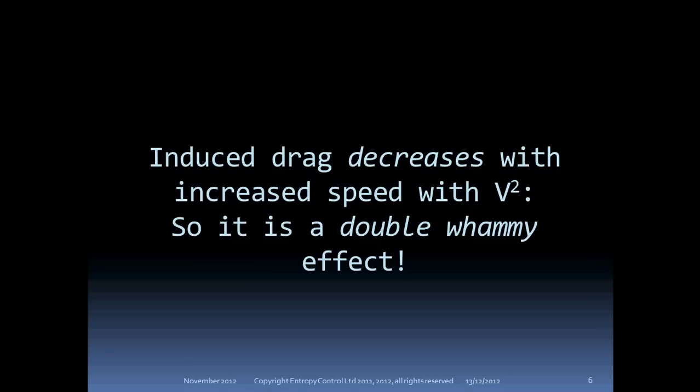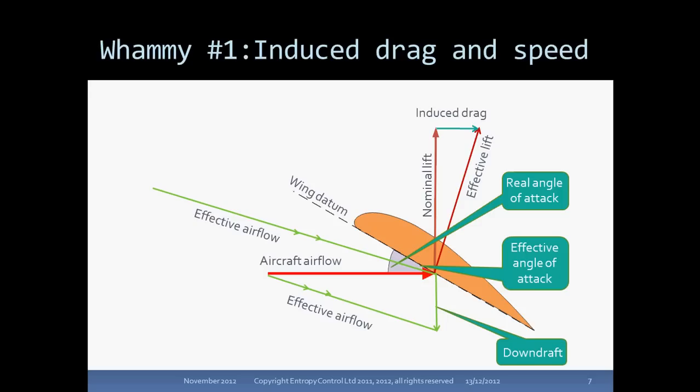You can increase the amount of air being worked on and decrease the downdraft by increasing speed. One of the nice things is that a speed increase has a double whammy effect. Let's take, for example, an aircraft in level flight flying very slowly at a high angle of attack. As we discussed in the previous lecture, the effect of airflow is coming in at a downward angle because of the high downdraft. The lift, being perpendicular to the effective airflow, is rotated backwards, introducing that turquoise induced drag force vector you see at the top.